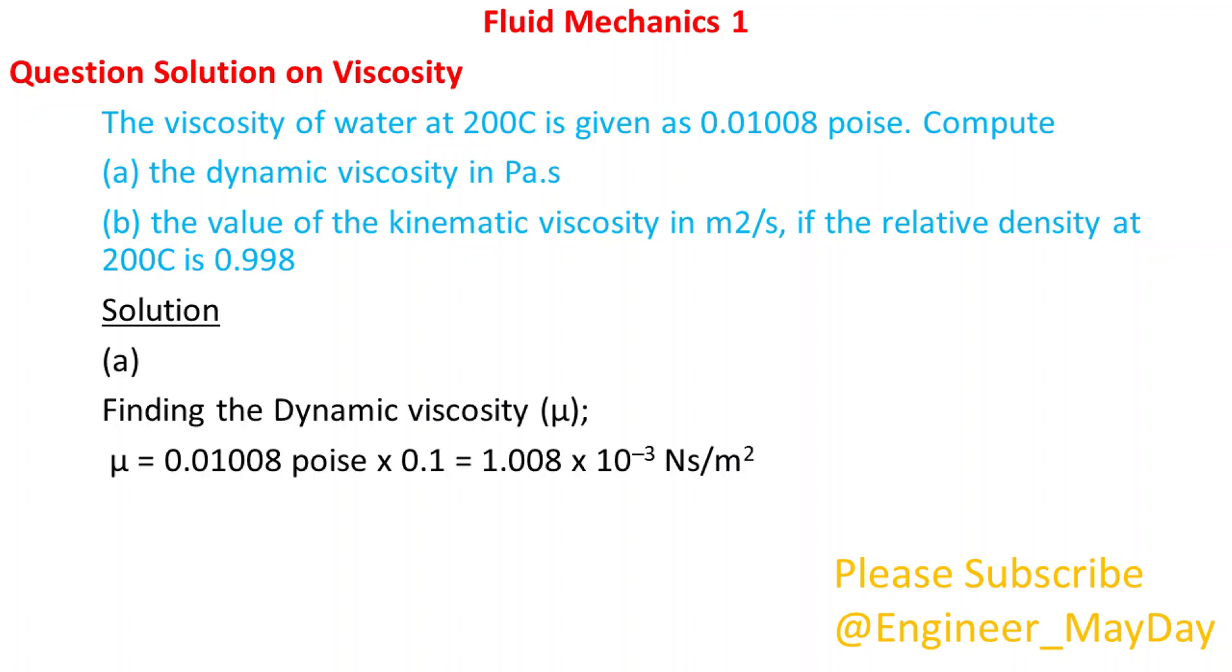Solution. A. Finding the dynamic viscosity, mu. Mu equals 1.008 times 10 to power minus 3 newton second per squared meter.